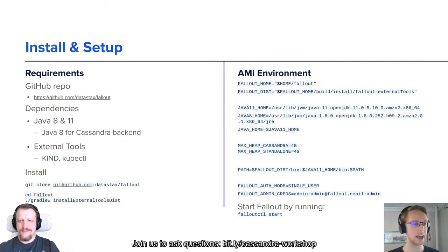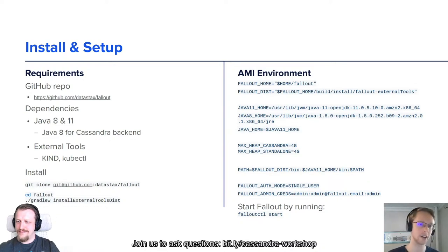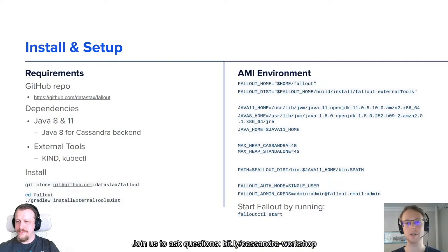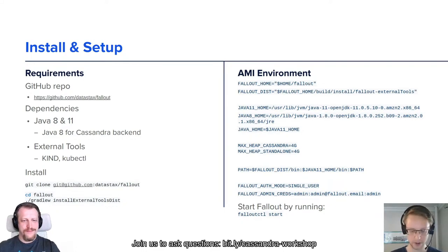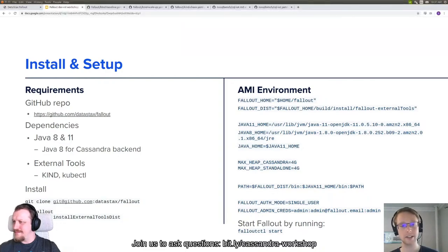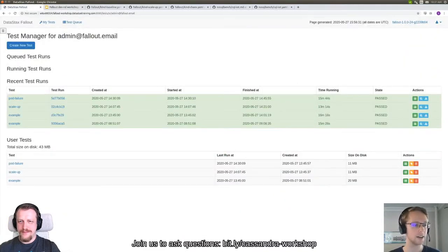I'll also be using the same Fallout image that was sent out, so everything should look quite the same. If you're interested in how to set Fallout up and the different options for running it, go look at our GitHub repo at Datastax Fallout. We're going to be running Fallout in single-user mode with only a single user. All of the tests we're going to be running are going to use Kubernetes in Docker, running locally on the same machine which is running Fallout.